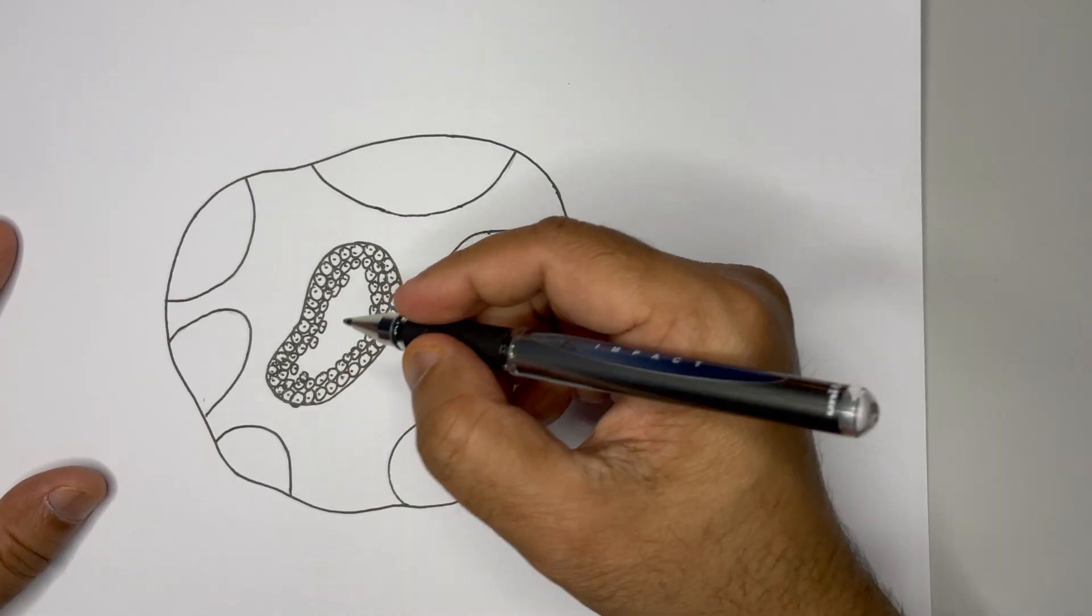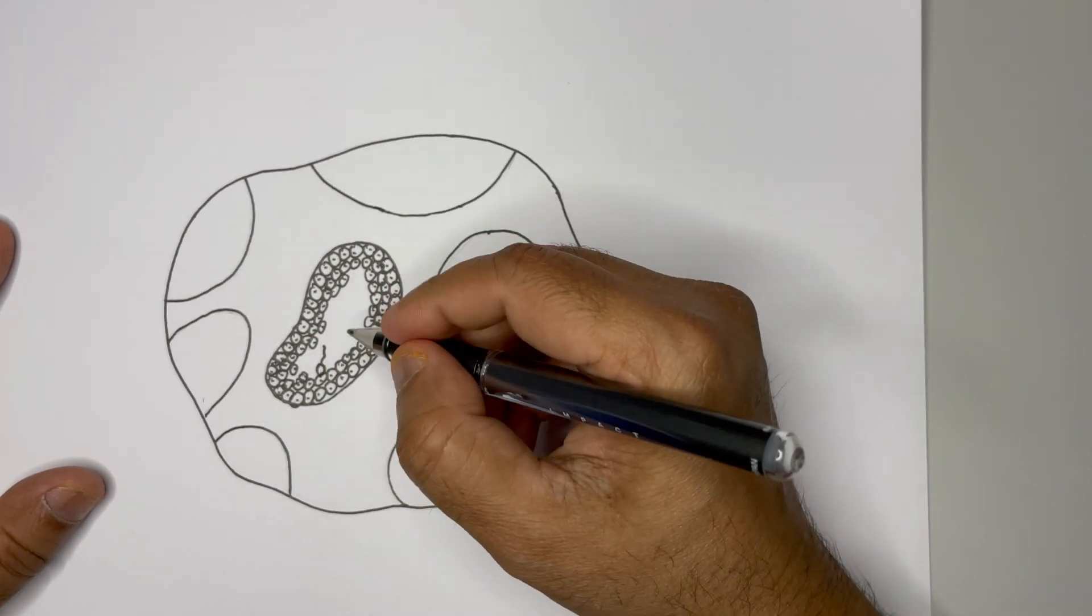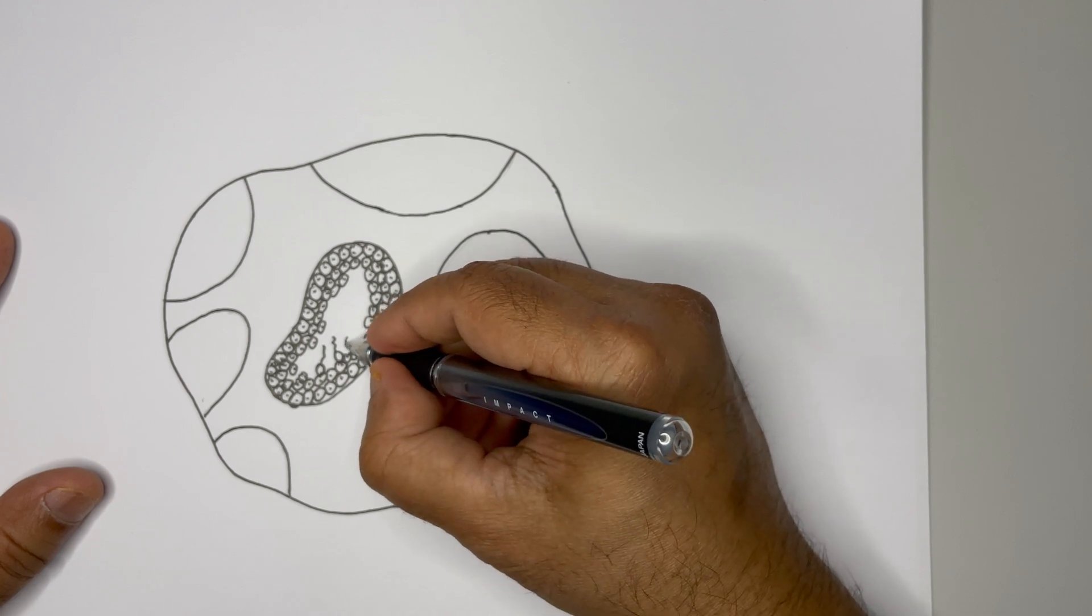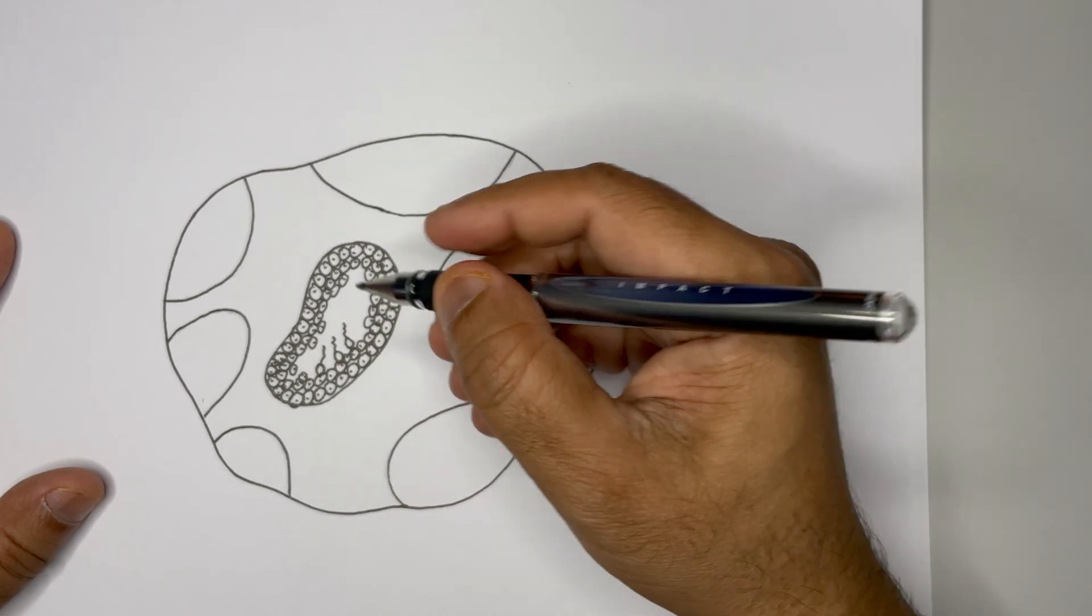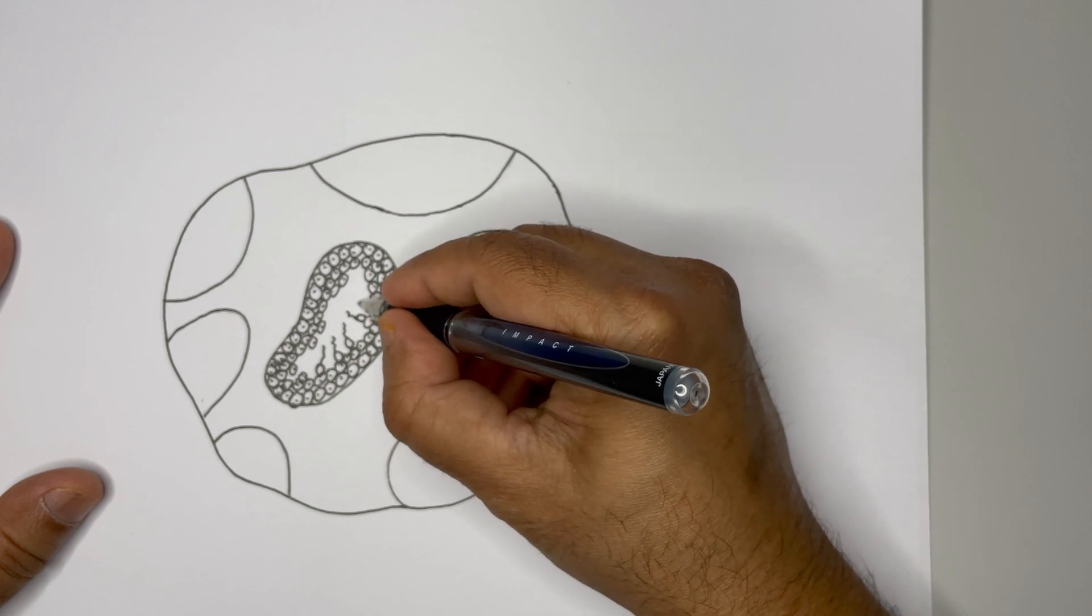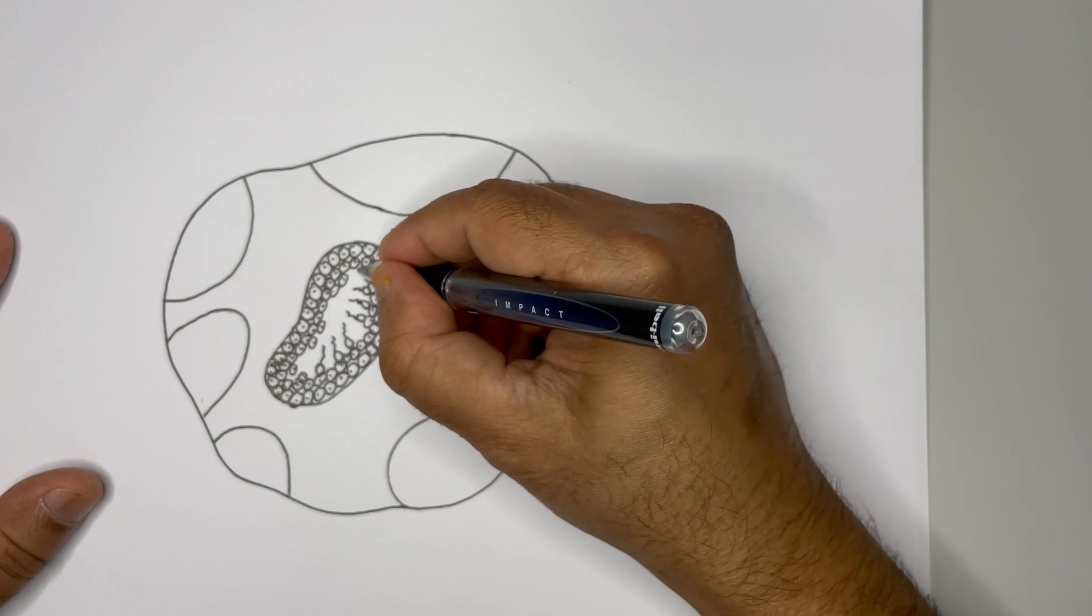And now let us draw the sperm. Just draw a small head and then a tail. That's the method of drawing the sperms inside it. So that tail shows that it is basically a sperm which is found inside.